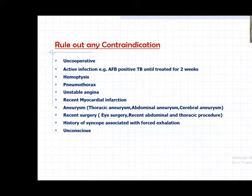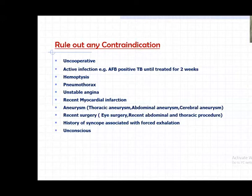There are certain contraindications to keep in mind. An uncooperative patient cannot perform the test. Active TB is a contraindication. With COVID-19, the machine can become infected. Active hemoptysis, current pneumothorax - particularly for the first three months - require caution, as no forced expiratory maneuver should be done. Recent aneurysm and history of syncope are also contraindications, as forceful expiration can cause loss of consciousness.